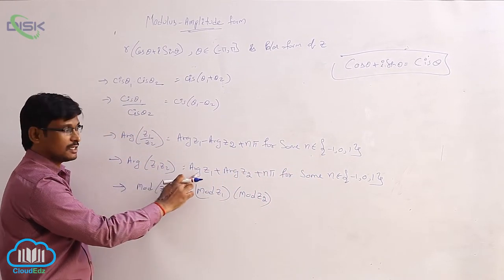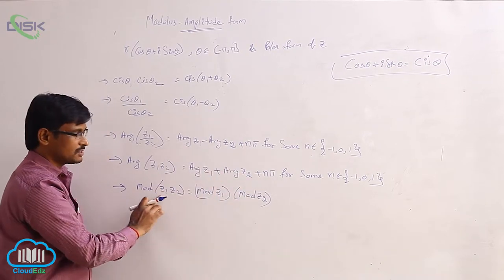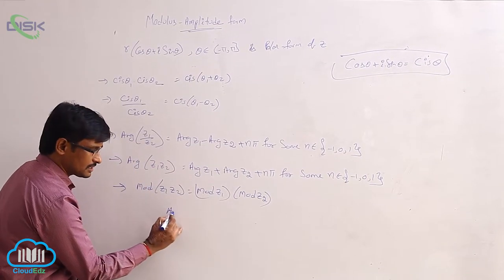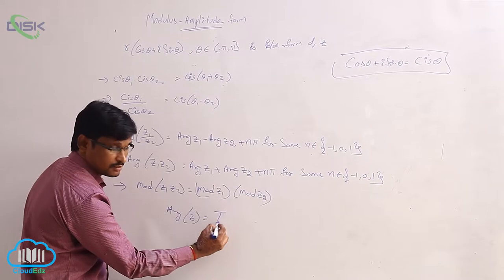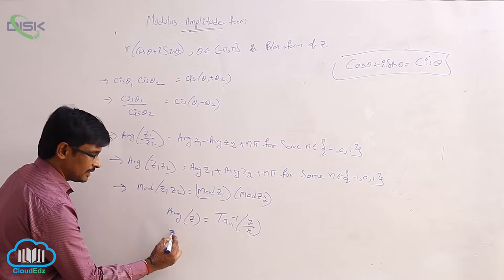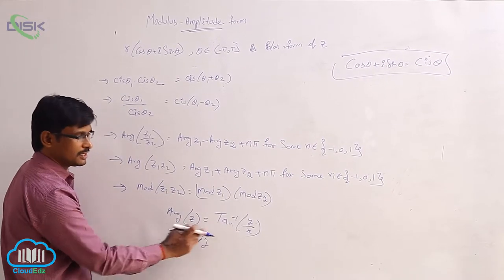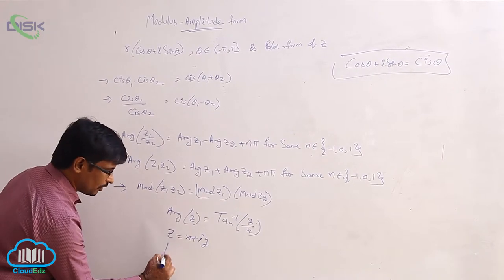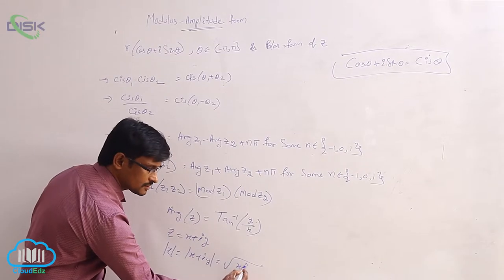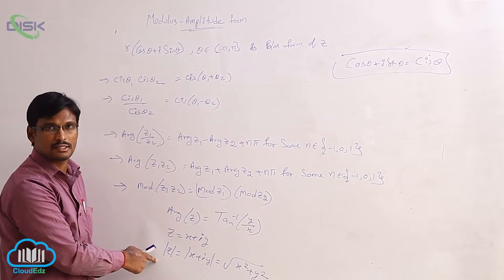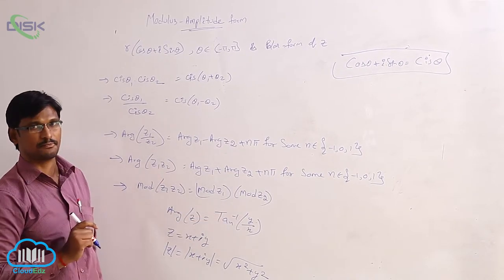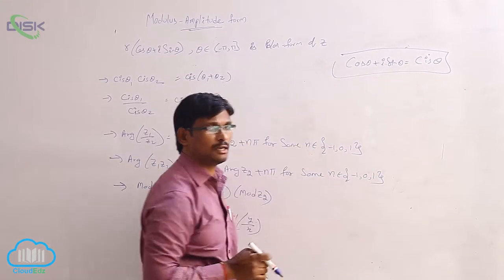arg(z₁z₂) = arg(z₁) + arg(z₂), and |z₁z₂| = |z₁|·|z₂|. As we know, arg(z) = tan⁻¹(y/x) where z = x + iy, and |z| = |x + iy| = √(x² + y²). These are the standard notations for modulus and argument.